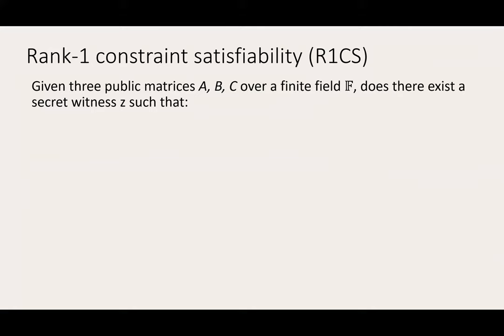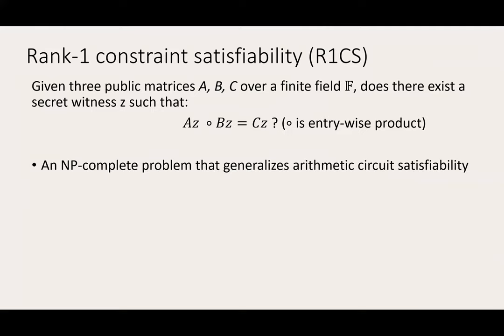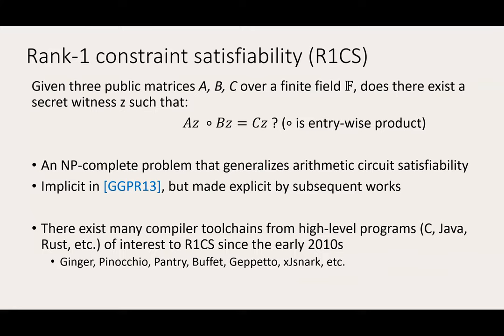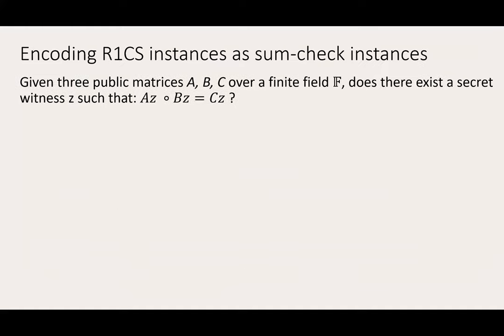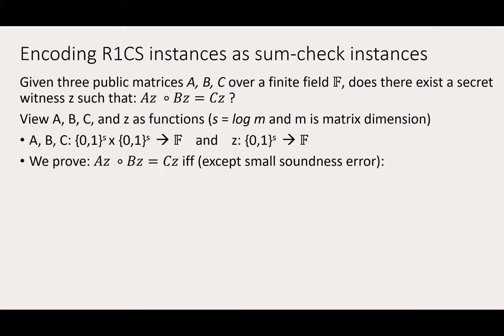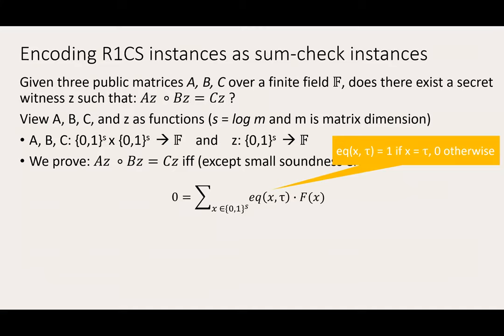Given three public matrices over a finite field, does there exist a secret witness Z such that the equation on the slide holds? This is an NP-complete problem that generalizes arithmetic circuit satisfiability. This problem is implicit in the work of GGPR but is made explicit in subsequent works. We are interested in R1CS because there exist many compiler toolchains from high-level programs to R1CS. To encode R1CS instances as SUMCHECK instances, we can view the three matrices and the witness as functions. In the paper, we show that an R1CS instance is satisfiable if and only if the depicted sum on the slide sums to zero, where EQ is a special multilinear polynomial that evaluates to one if and only if the two arguments are equal, and F is another polynomial where Ã is the unique multilinear extension of A — meaning Ã is a multilinear polynomial that agrees with A over the Boolean hypercube.